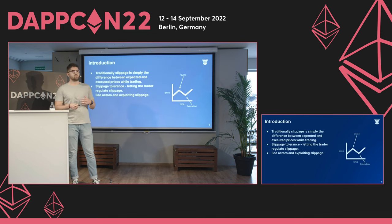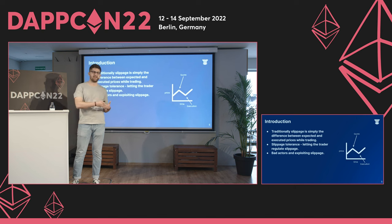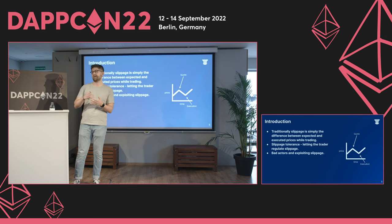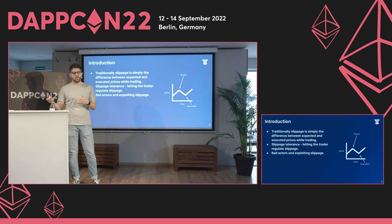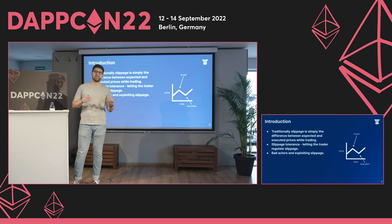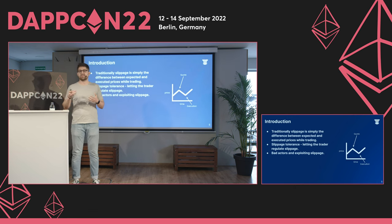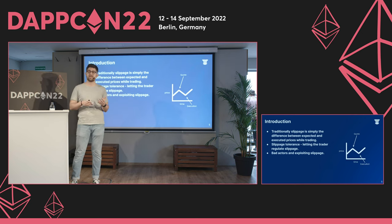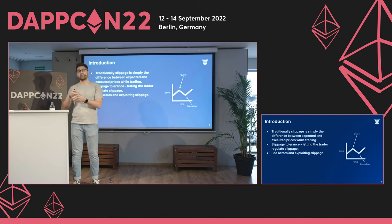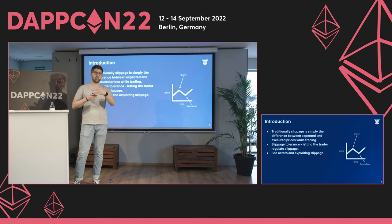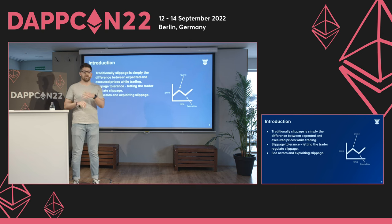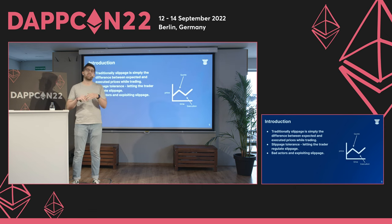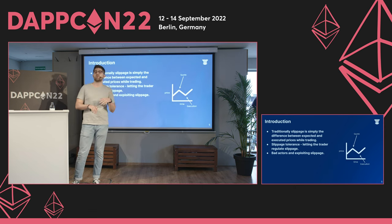Traditionally, slippage is simply the difference between the expected and executed prices while trading. This happens because when an aggregator shows you a quote, time can pass, prices can change, and once you sign and execute your trade, the prices have changed. This is also a very tricky problem for aggregators because they always want to show you the best price possible, but they don't want to over-promise or under-promise — if they over-promise, you're unsatisfied, and if they show less, you may trade at another aggregator.